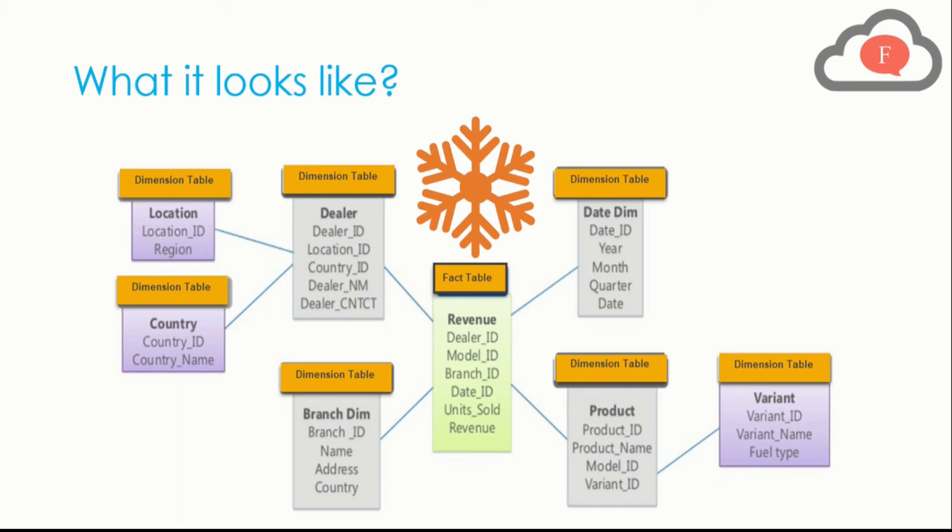As I told you in the characteristics about the reduction of disk space, if you see the dimension tables: in one we have location ID and region; in another we have country ID and name; and in this dimension table we have dealer ID, location ID, country ID, dealer name, dealer category, and contact.